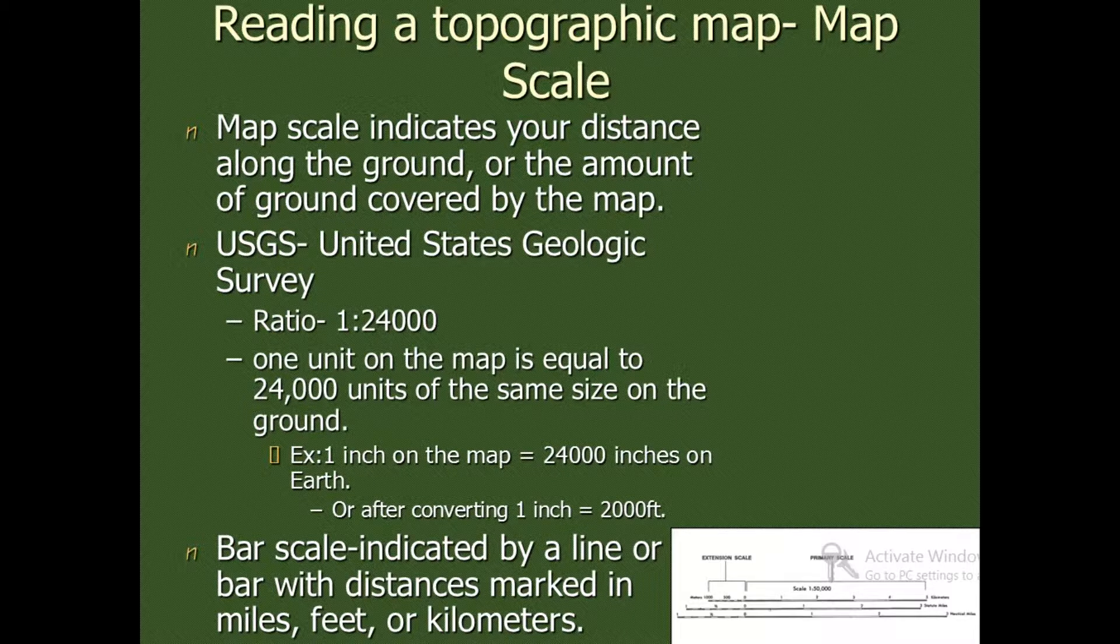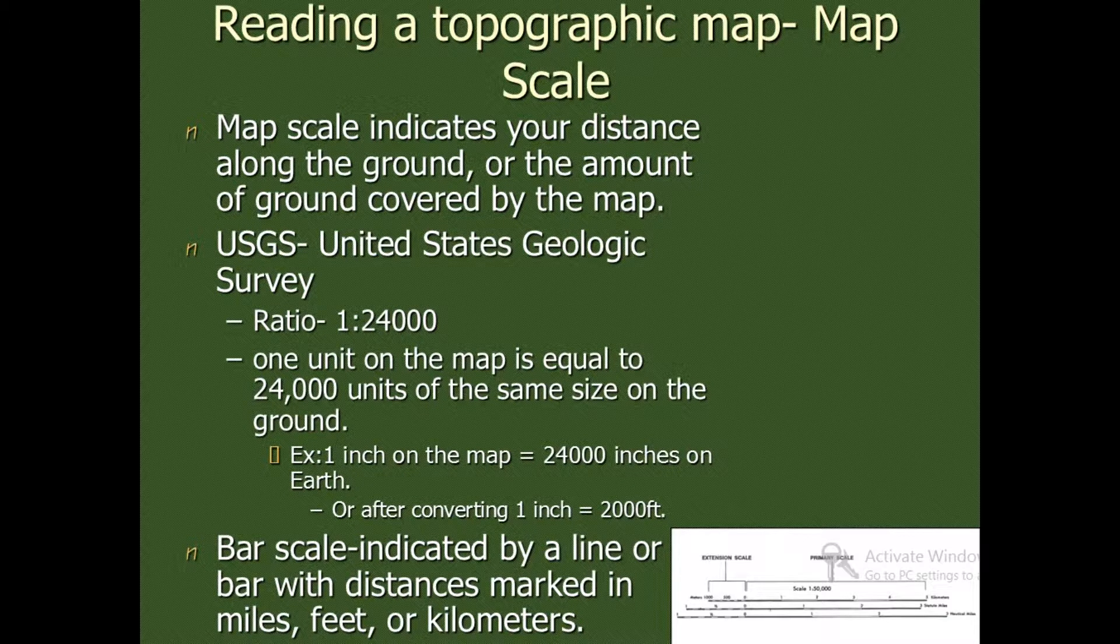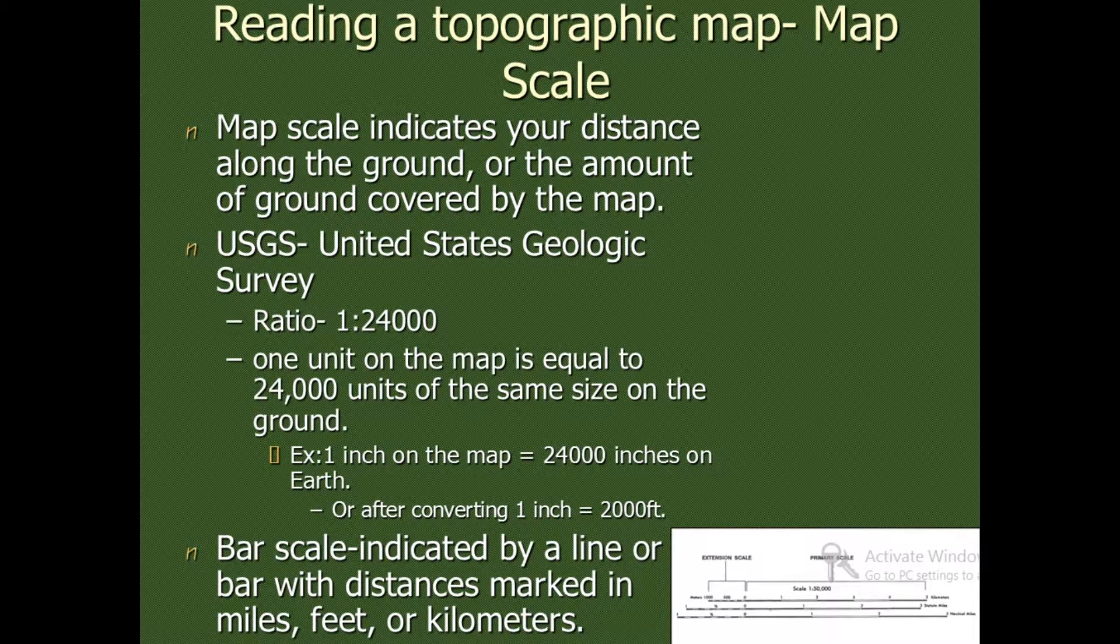Bar scale is indicated by a line or bar with distance marked in miles, feet, or kilometers. We will also find that bar scale is more appropriate for the map because if we reprint the map on different scales, then the bar will also get reduced or enlarged according to the scale of the map, so it is a better representation.